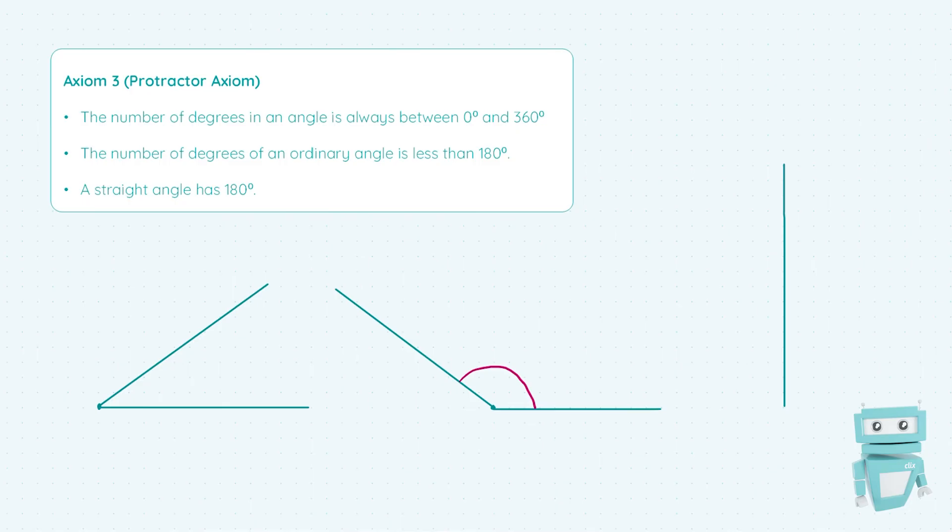The third and final point states that a straight angle has 180 degrees. Over here on the right we've got a straight line, and in this straight line we've got 180 degrees. This is kind of half the 360 degrees you'd find in a circle. That's it for this axiom. I hope you enjoyed and I'll see you next time.